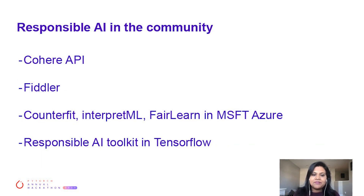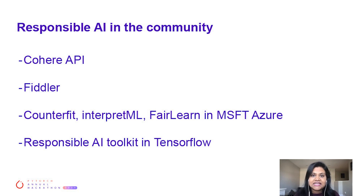Here are some examples of Responsible AI in the community. Cohere API provides access to models that read billions of web pages and learn to understand the meaning, sentiment, and intent of the words used. It anticipates and accounts for risks during the development process by running adversarial attacks, filtering data for harmful text, and measuring models against safety research benchmarks.